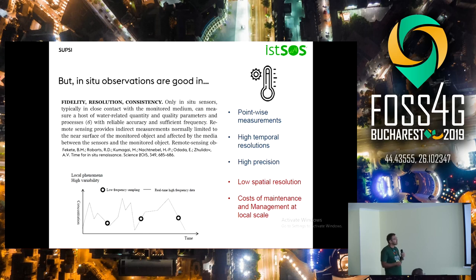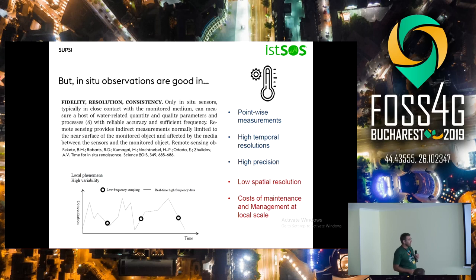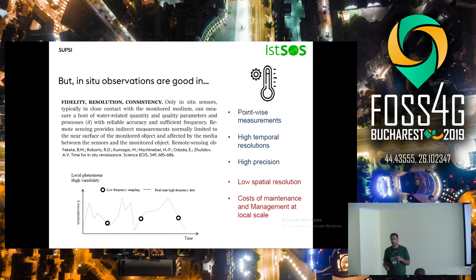In-situ sensors are generally point measurements — you have a sensor at one location collecting information at high temporal resolution. This allows us to understand local high-variability phenomena. Instead of sampling at high spatial resolution, if you have a higher sampling frequency you can detect phenomena with greater precision. The drawback is low spatial coverage, because it is a single point and you cannot deploy 10,000 sensors across a large area.